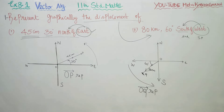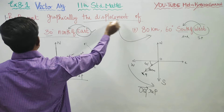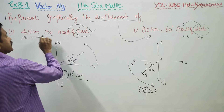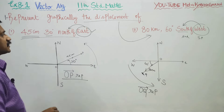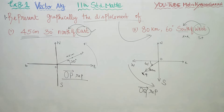This is the displacement of 45 cm, 30 degrees north of east. Just two more questions. Graphically, this is the better way of representing the question. Thank you.